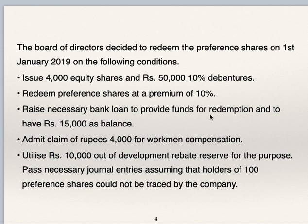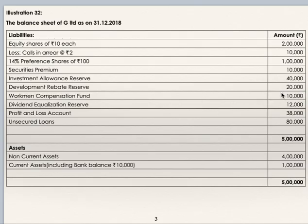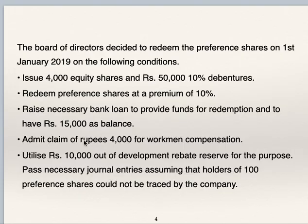Raise a necessary bank loan to provide funds for redemption and maintain Rs. 15,000 as closing bank balance. If the amount is not sufficient then a bank loan is to be taken. We have to find out the amount of bank loan. Admit a claim of Rs. 4,000 for workman's compensation. Workman's compensation fund is Rs. 10,000 but the workman's compensation claim is Rs. 4,000. So out of the Rs. 10,000 fund, after admitting this claim of Rs. 4,000, remaining Rs. 6,000 can be used for the purpose of redemption, i.e. for transfer to CRR.